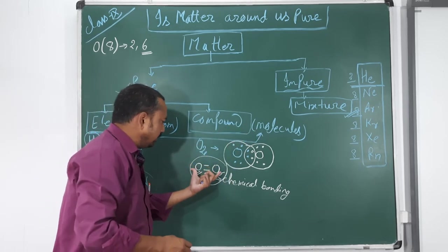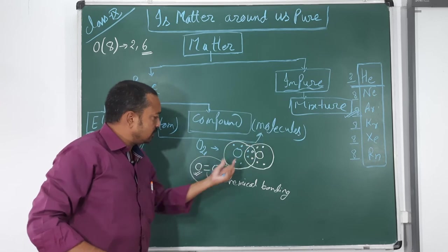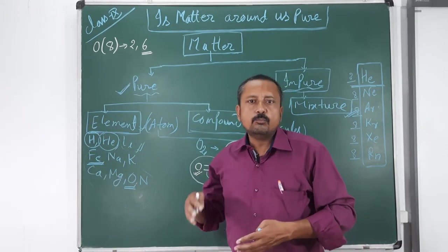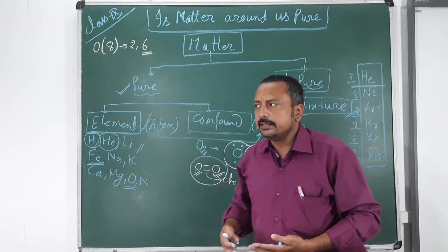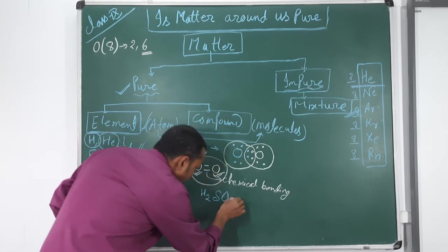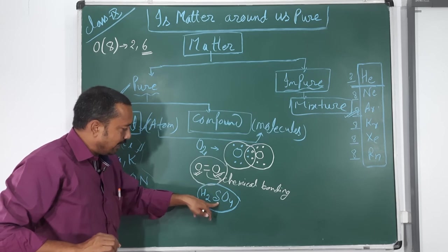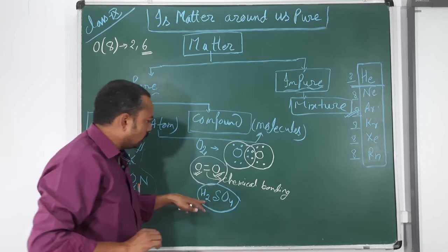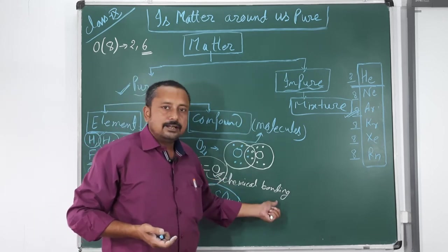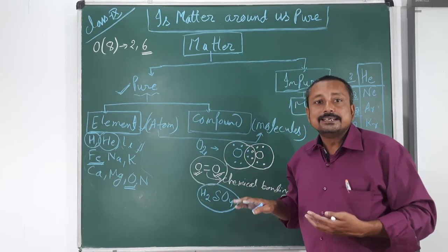One molecule of O2 is formed by bonding two oxygen atoms. In other molecules, more than two atoms may be present. For example, sulphuric acid H2SO4 is one molecule consisting of two hydrogen atoms, one sulphur atom, and four oxygen atoms. All these atoms are bounded together by chemical forces, and these chemical forces are known as chemical bonding, arising due to gain, loss, or sharing of electrons.